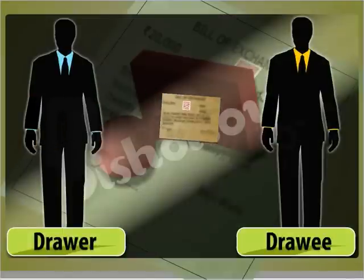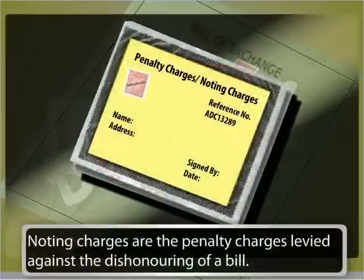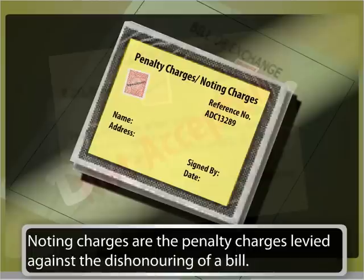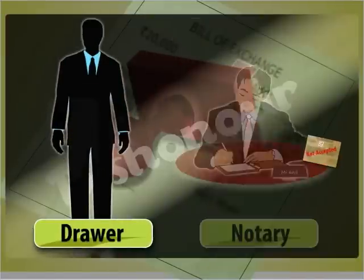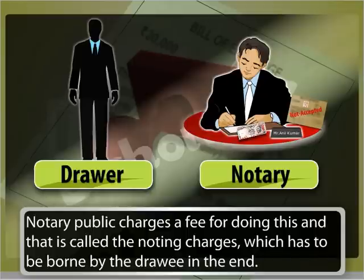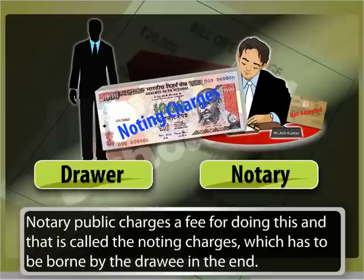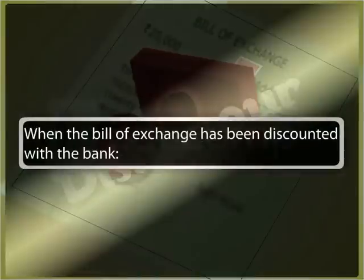A bill is said to be dishonored by non-acceptance if the drawee refuses to accept the bill. Noting charges are the penalty charges levied against the dishonoring of a bill. When a bill gets dishonored, the drawer makes it noted by the notary public. Notary public charges are the fee for doing this, and that is called the noting charges, which has to be borne by the drawee in the end.